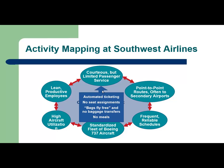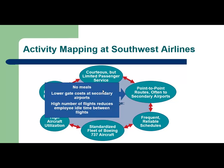They try to limit some of the services but at the same time remain courteous and work with customers on seating and services provided on the airplane. They selected point-to-point routes using secondary airports instead of major airports, which reduces gate cost, increases the number of flights, and reduces employee idle time between flights.